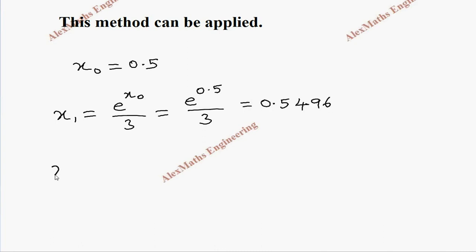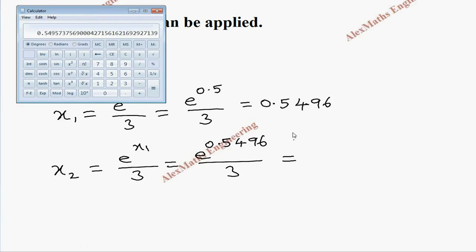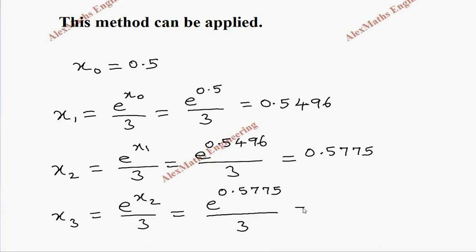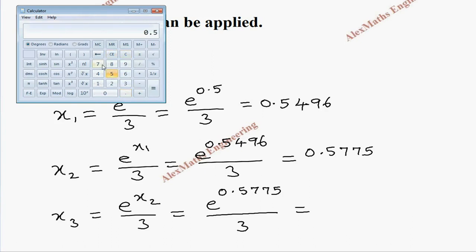Coming to x₂ = e^(x₁) / 3 = e^0.5496 / 3. Calculating: 0.5496 → e^x → divide by 3 gives 0.5775, so x₂ = 0.5775. Then x₃ = e^(x₂) / 3 = e^0.5775 / 3. Calculating: 0.5775 → e^x → divide by 3 gives x₃ = 0.5939.